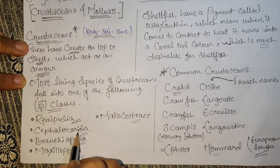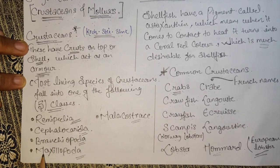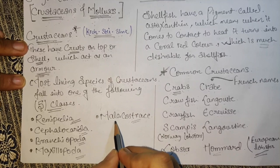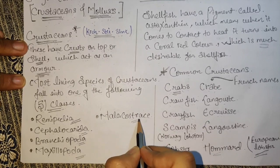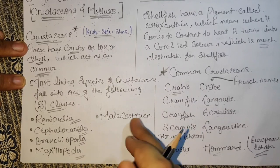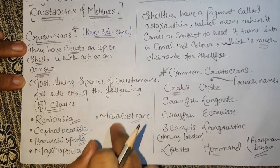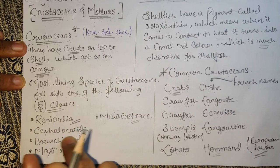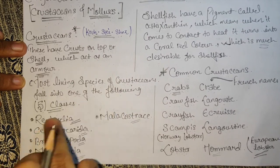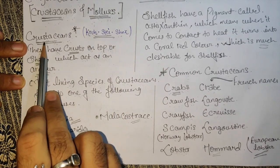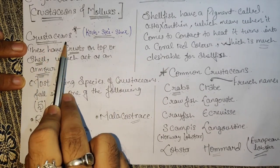The five classes are: Remipedia, Cephalocarida, Branchiopoda, Maxillopoda, and Malacostraca. I have shared these five classes here just as general knowledge.